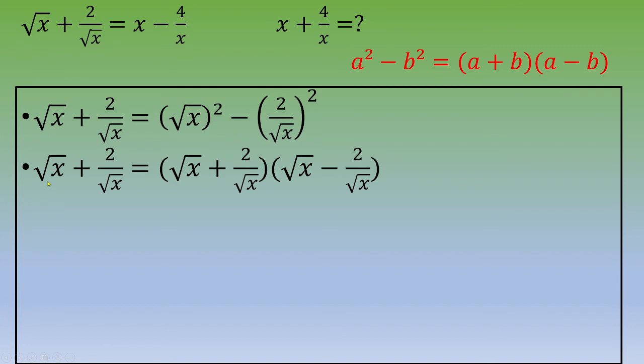Here you end up with square root of x plus 2 over square root of x equals square root of x plus 2 over square root of x times square root of x minus 2 over square root of x.